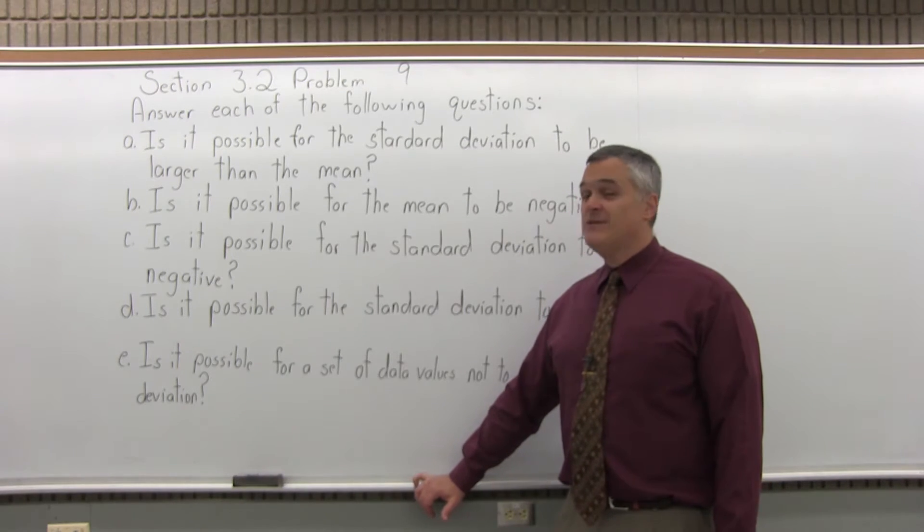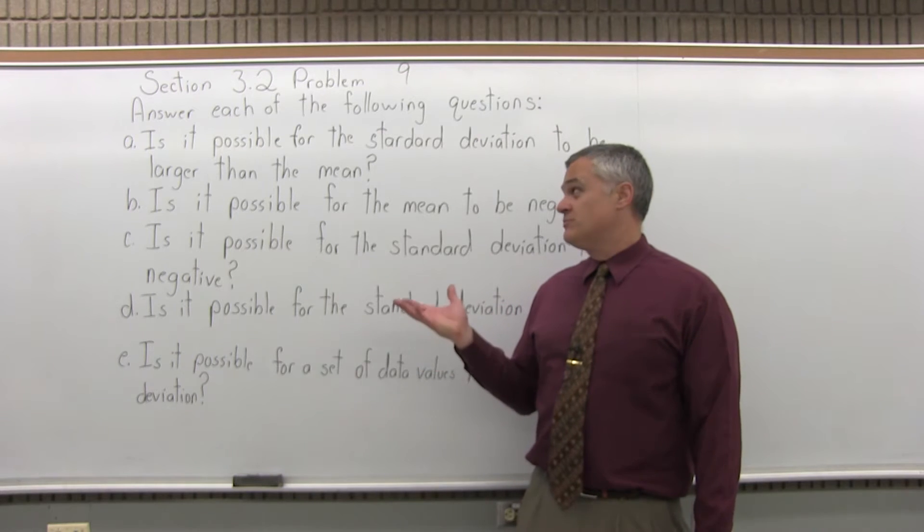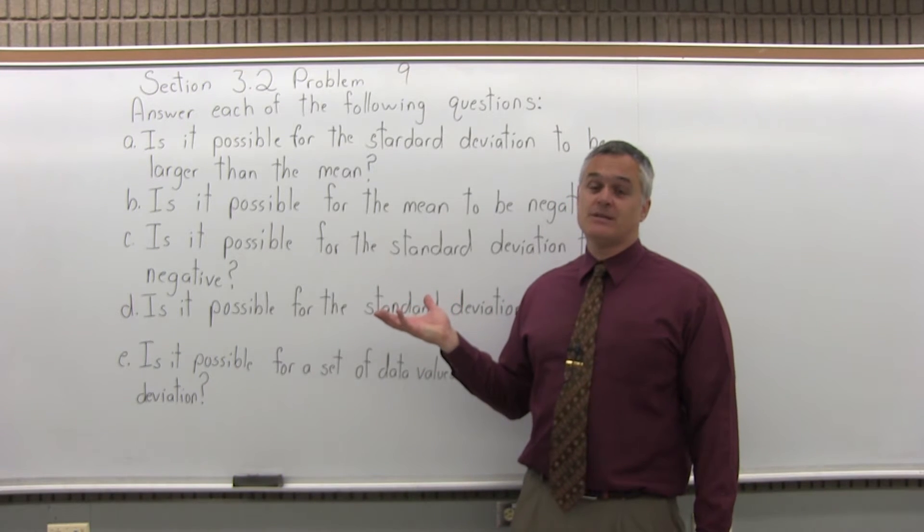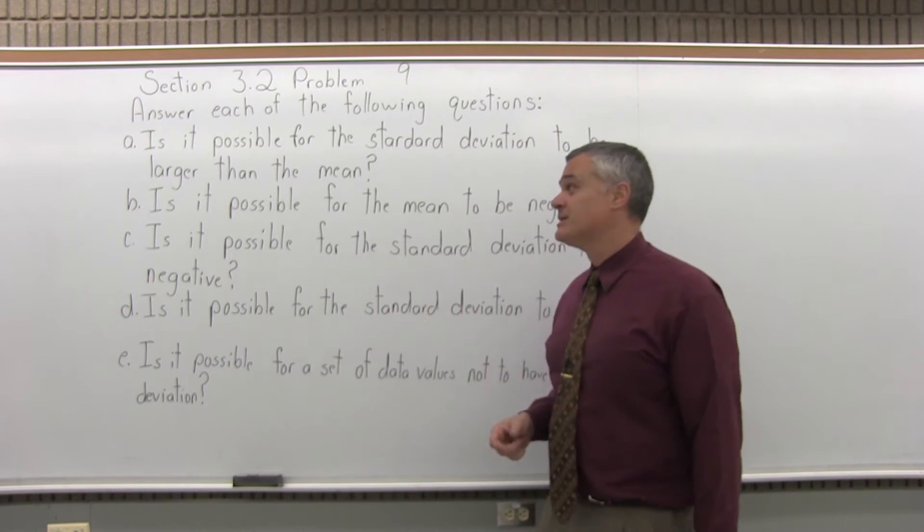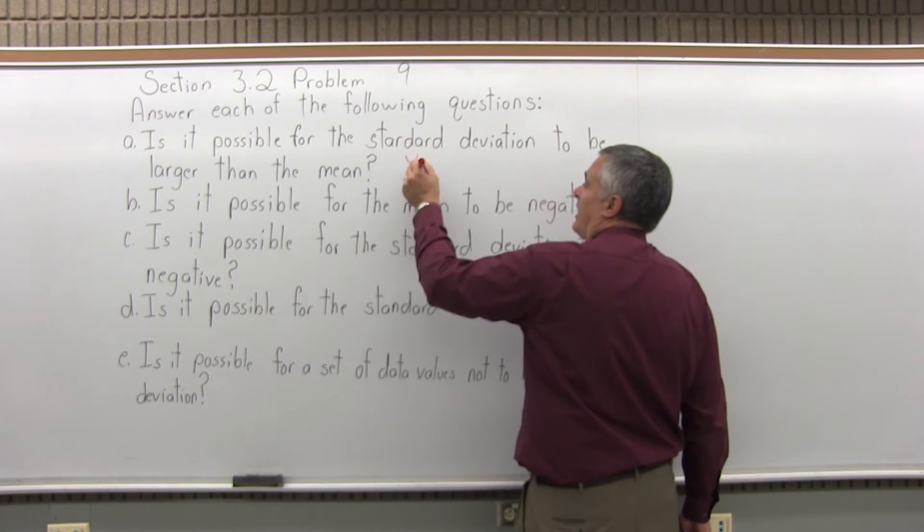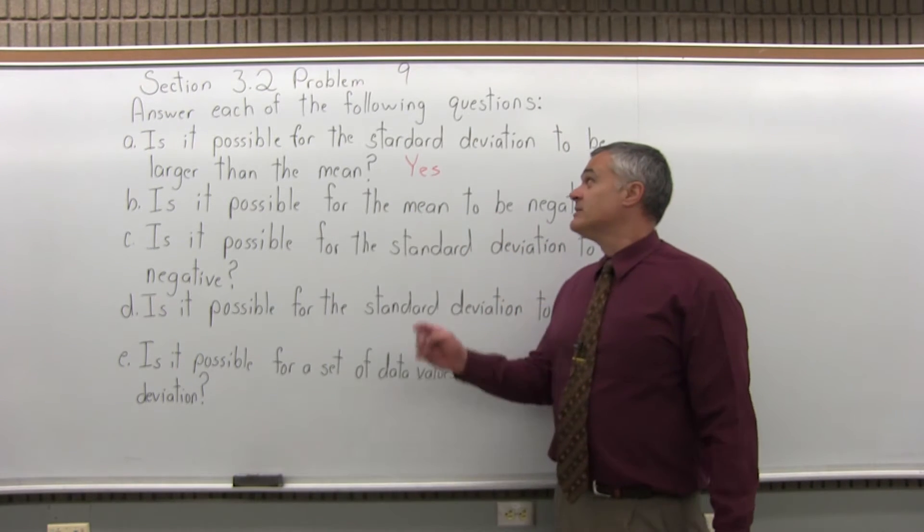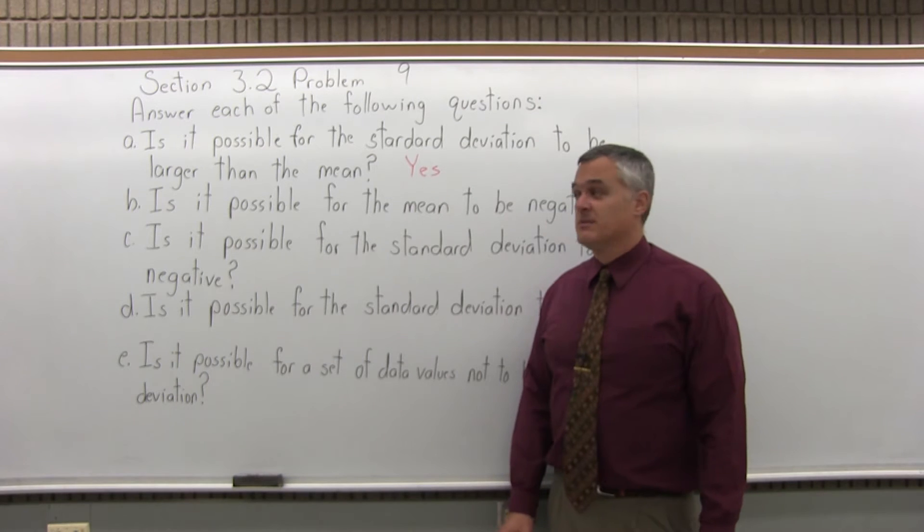So the standard deviation or the average spread in the data of temperature in January days in Minnesota would be a positive value. So positive has to be bigger than negative. It is possible. Usually it's not the case, but you can definitely have cases where the standard deviation is larger than the mean.